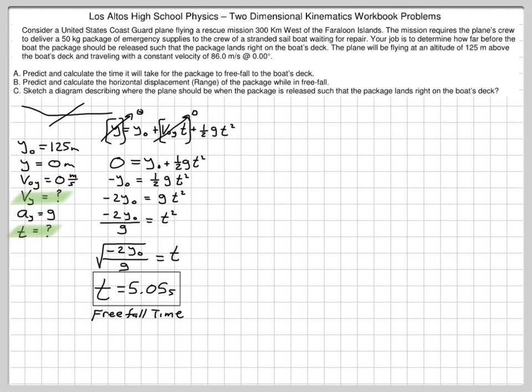This is the time it took the package to fall towards the deck of the boat. Now, this is really the time it took. Another way to look at this, if the ball was to start just from rest 125 meters high and fall straight down, it would take 5.05 seconds. Now, in this problem, of course, the ball is traveling sideways as well as vertically. So how far does it travel sideways? What's the range of the ball?